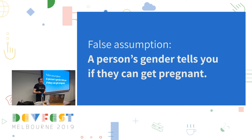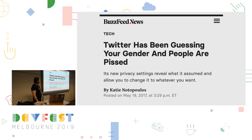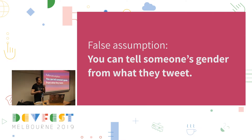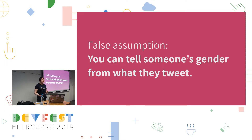A few years back, there was this headline. It came out that Twitter hadn't been asking for anyone's gender — there was no gender option when you sign up for Twitter. But they still wanted information on people's gender so that they could sell better ads. So what did they do? They built an algorithm. They decided they could tell someone's gender from what they tweet. And needless to say, it was not accurate. When this article came out, Twitter had let you see the data they thought they had on you, and a lot of people were able to go check what gender Twitter thought they were — and in a lot of cases, it was wrong.